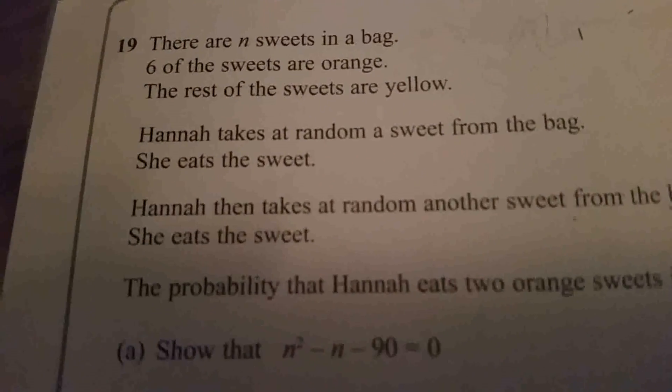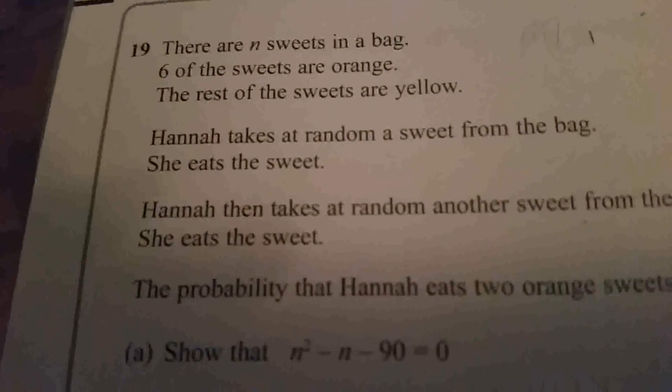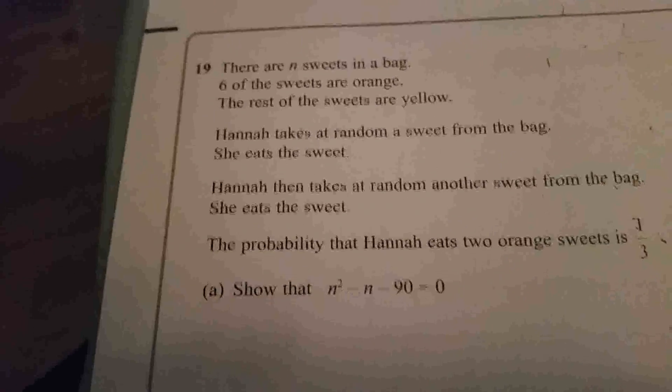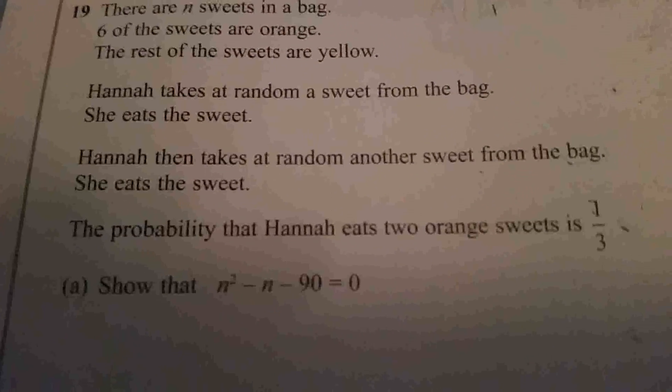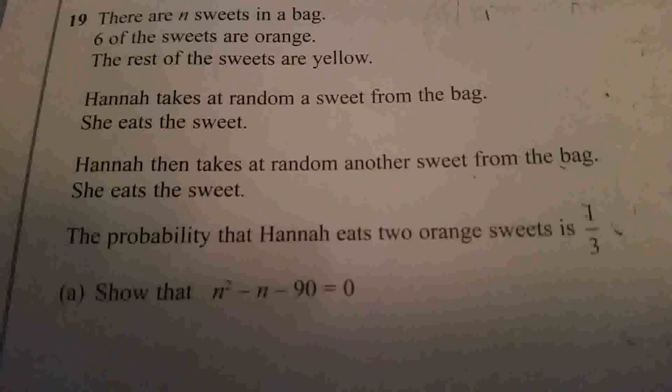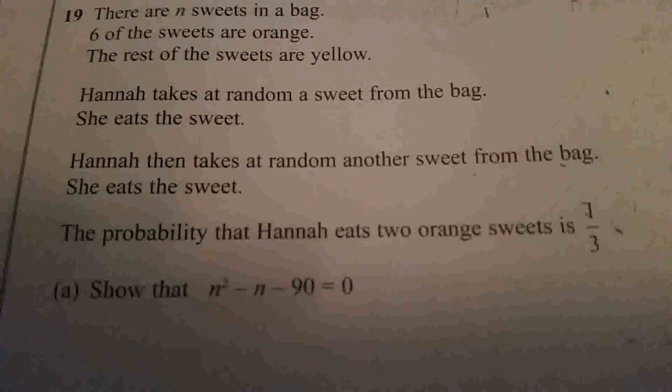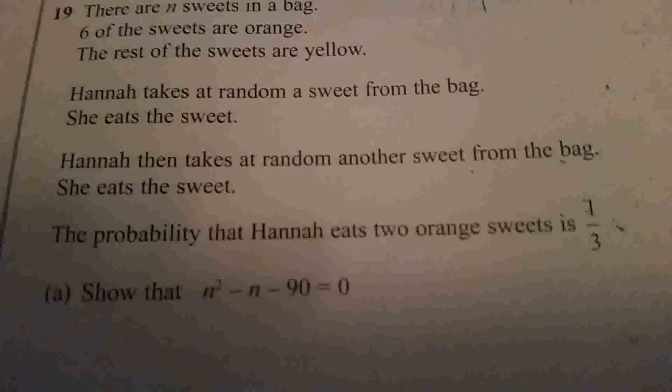There are n sweets in the bag. Six sweets are orange, the rest of the sweets are yellow. Hannah takes a sweet at random from the bag, she eats the sweet, and basically she does that twice. You have to show that n² - n - 90 = 0.